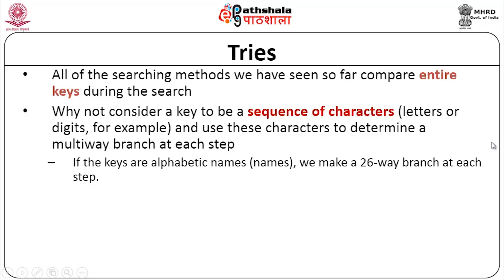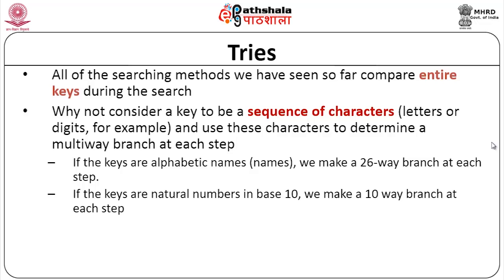If the keys are alphabetic names, we may make a 26-way branch at each step, because you have A through Z — 26 characters. If the keys are natural numbers to base 10, then you can have a 10-way branch. So, the multi-way branching of the tree is determined not by what type of tree it is, but by the number of characters that can occur in the key.